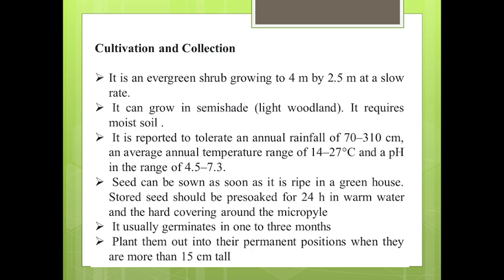The seed sowing method is used for cultivation. Seeds can be sown as soon as they are ripe in a greenhouse. Stored seeds can also be used — when stored seeds are used, they are pre-soaked for 24 hours in warm water so that the hard covering around the micropyle is removed, which fastens the rate of germination. It usually germinates in 1 to 3 months.